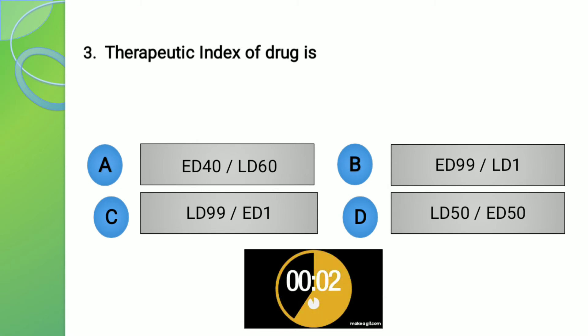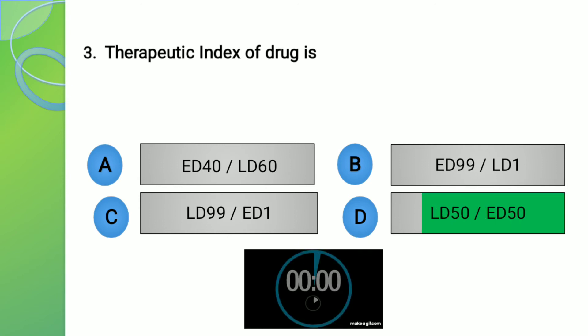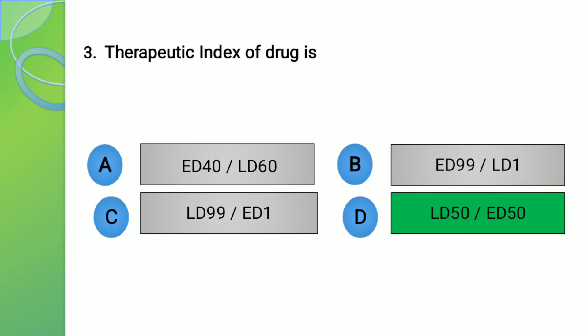The right answer of this question is option number D, that is the formula for therapeutic index of a drug is LD 50 upon ED 50.